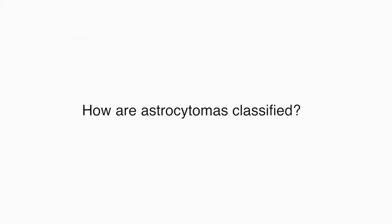How are astrocytomas classified? Astrocytomas are primary brain tumours arising from a specific type of glial cell called an astrocyte. They are the most common type of glioma and are classified into four grades.